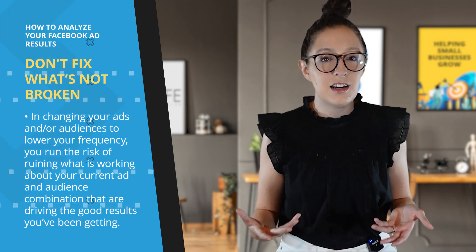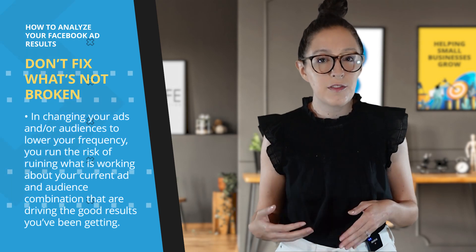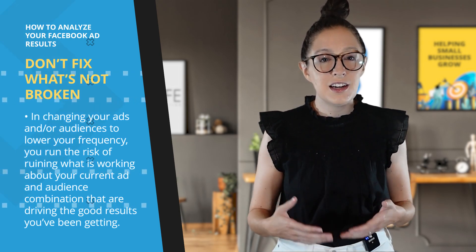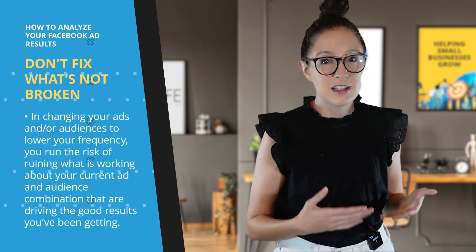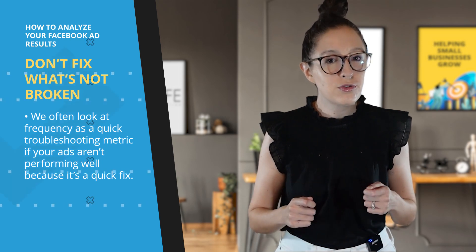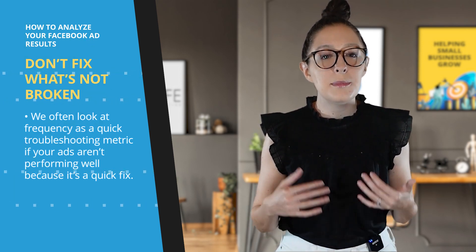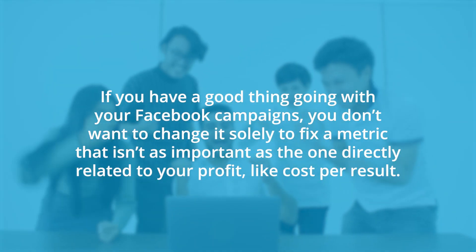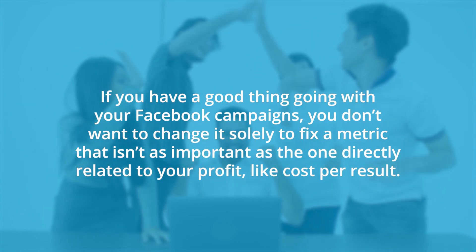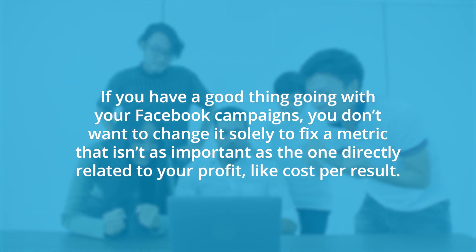The same people seeing your ad eight times isn't bad if you're still generating great results at a profitable cost. But it is bad if you're not. That's why we often look at frequency as a quick troubleshooting metric if ads aren't performing well. What I'd advise if your frequency is high but you're happy with your cost per result: leave things as they are for now, but have backup audiences and ads ready to test in the event results start slowing down. If your budget is big enough, consider already running those in another ad set as an A/B split test. You don't want to change a good thing solely to fix a metric that isn't as important as cost per result.